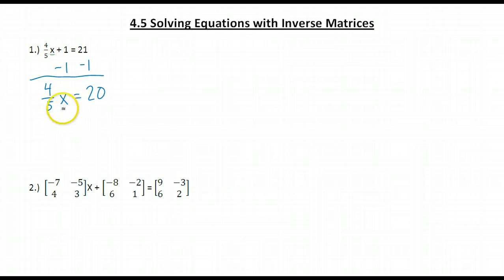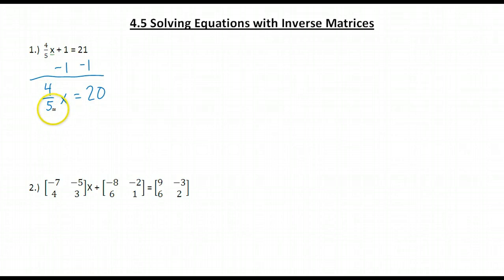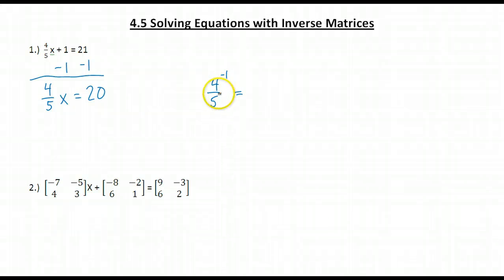Now at this point, most of you are used to just dividing both sides by 4 fifths. But I want you to think of it differently. In order to get rid of this 4 fifths, I'm going to want to multiply by the inverse of 4 fifths. So what is the inverse of 4 fifths? In multiplication, the inverse is the reciprocal. So the inverse of 4 fifths is actually 5 fourths.